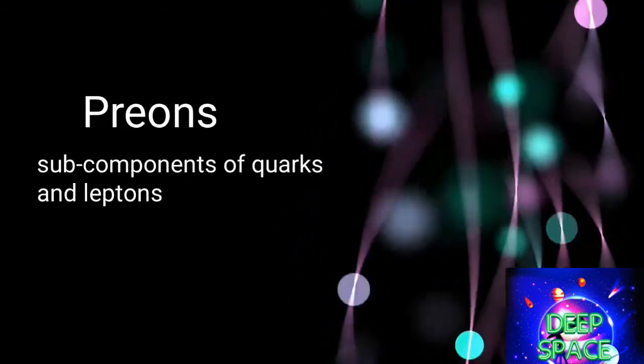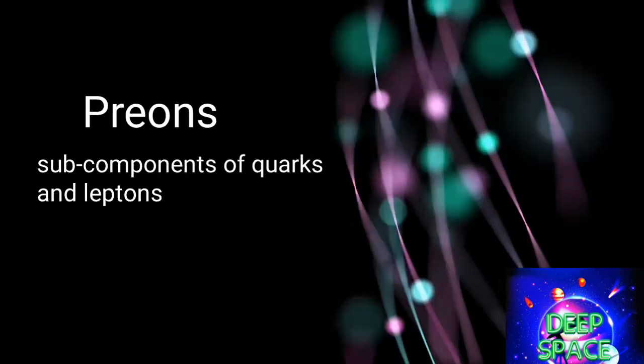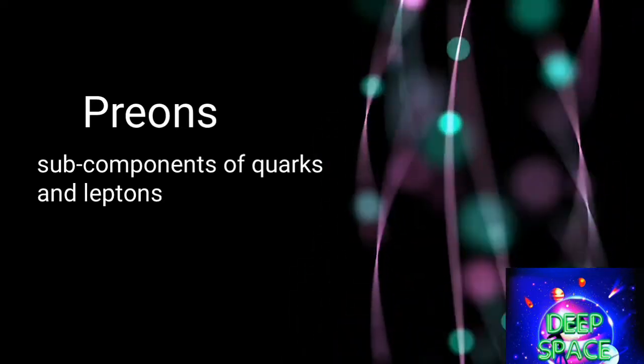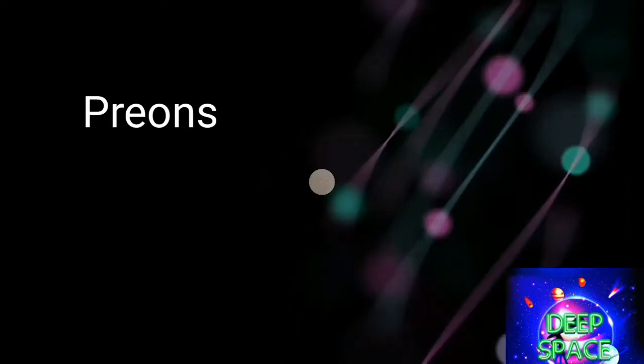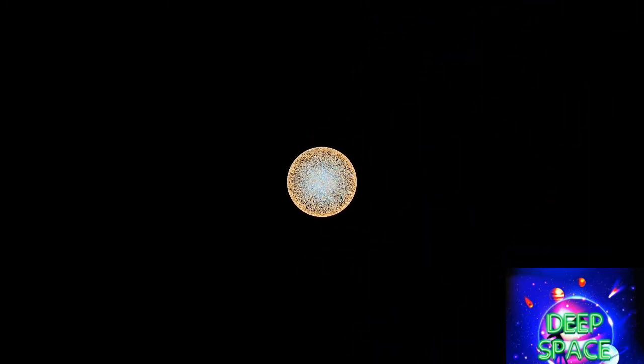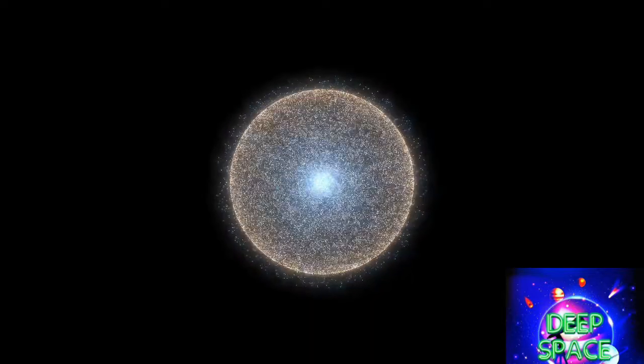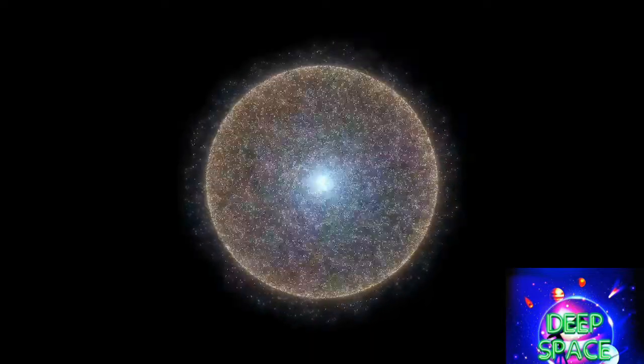But scientists think quarks can be further broken into another particle, preons. These are point particles, sub-components of quarks and leptons. After the Big Bang, original stars were made of these sub-subatomic particles, with most gradually becoming made of sub-particles and then particles.